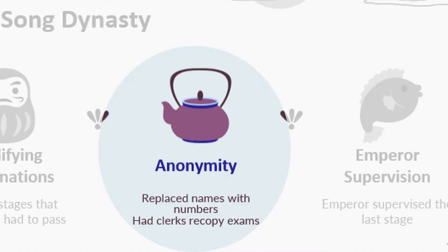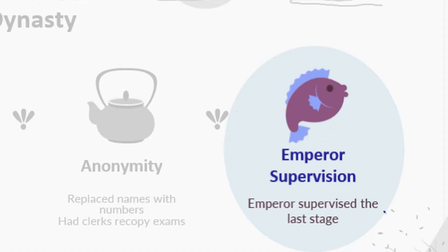The second thing the Song dynasty did was make the test anonymous. Those taking the exams replaced their names with numbers, and clerks recopied the exam so that handwriting could not be recognized. The last improvement was that the emperor supervised the last stage to make sure that the best contestants were chosen for the government.